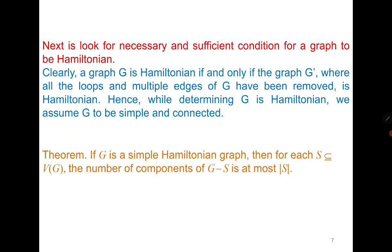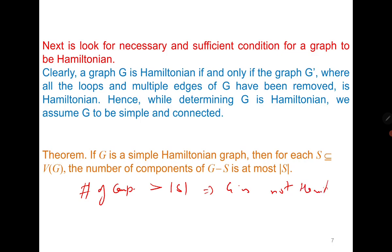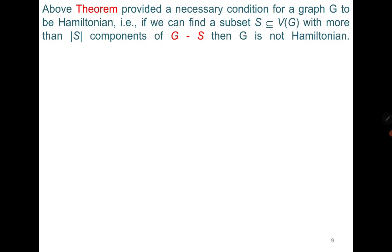Now let us go back to the statement. This is a necessary condition, and therefore if we write down its negation, it says that if the number of components of G minus S is greater than the cardinality of S, then G is not Hamiltonian. This is why the result is very important. The above theorem provides a necessary condition: if we can find a subset S of the vertex set with more than |S| components of G minus S, then G is not Hamiltonian.